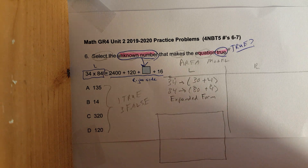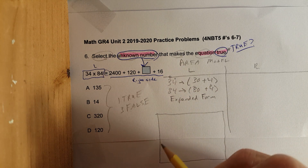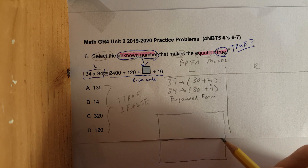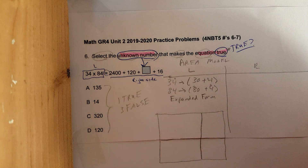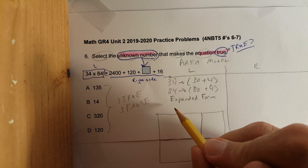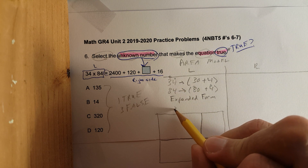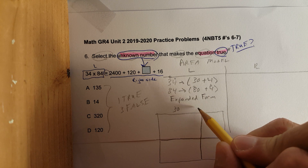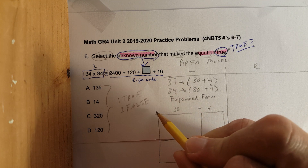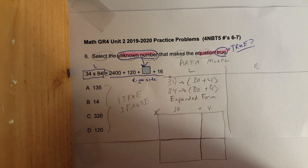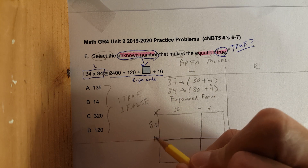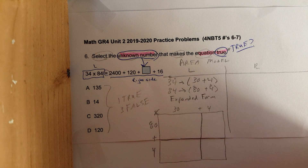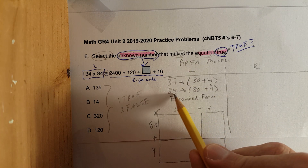Let's draw the area model right here. I'll put a line there and a line down to form our area model shape. I'm going to take the first number, 30 plus 4, and place it along one side — and then 80 plus 4 along the other side. That's where those two numbers come from.